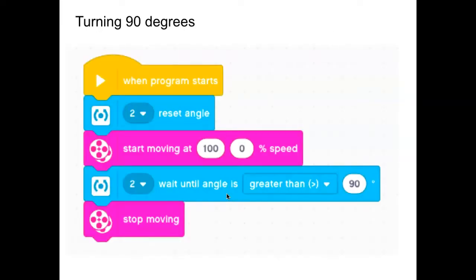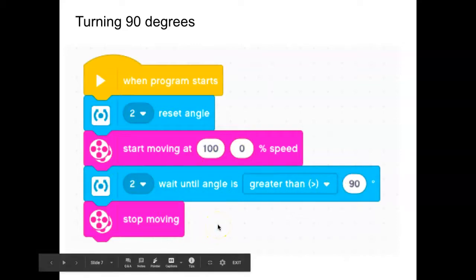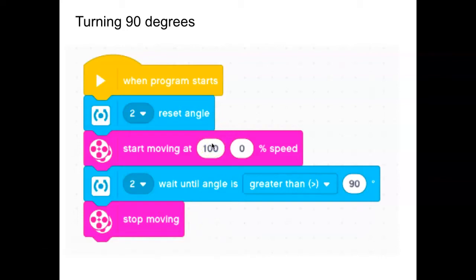Here it is. This one will turn at least 90 degrees for sure. This is the first attempt. When the program starts, reset the angle—this is that software reset. It's going to set it back to zero. This is a pivot turn where you're sending all the power to one of the two motors. It's going to the left motor and zero power to the other motor. We're going to wait until the angle is greater than 90 degrees, then stop moving. The problem is, especially at 100%, the robot is going to turn so quickly that it's going to blow past 90 and stop when it's maybe at 95, 98, maybe almost 100.